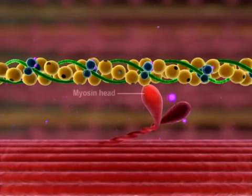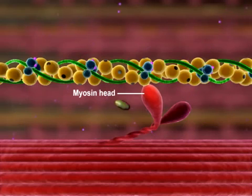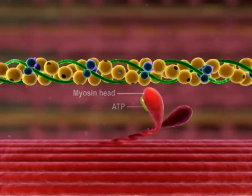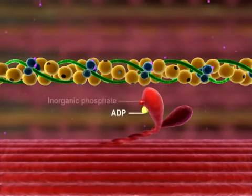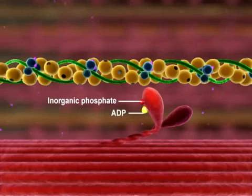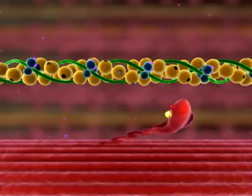The myosin head must be activated before a crossbridge cycle can begin. This occurs when ATP binds to the myosin head and is hydrolyzed to ADP and inorganic phosphate. The energy liberated from the hydrolysis of ATP activates the myosin head, forcing it into the cocked position.